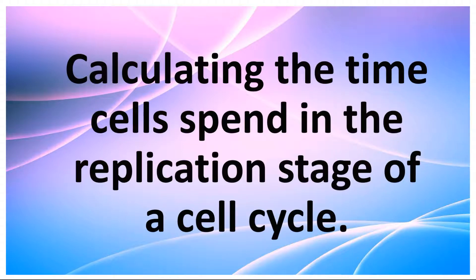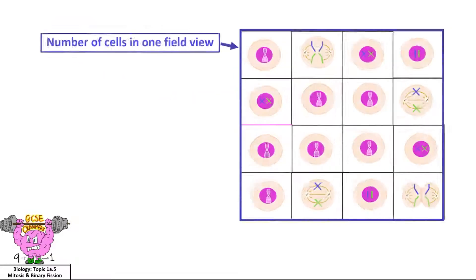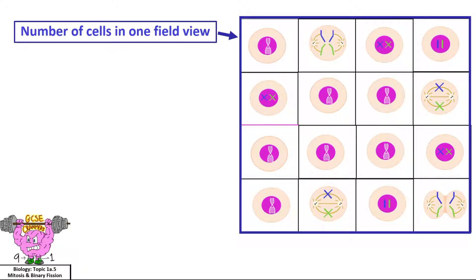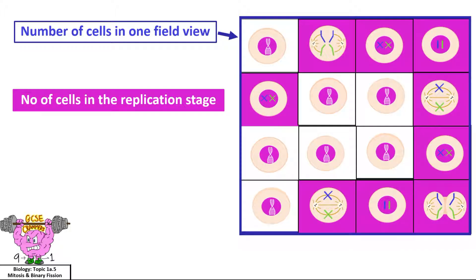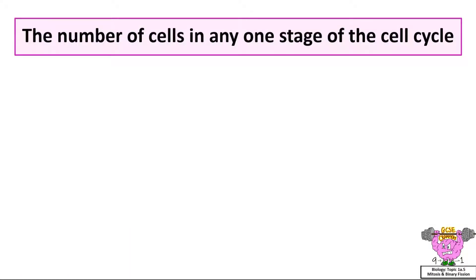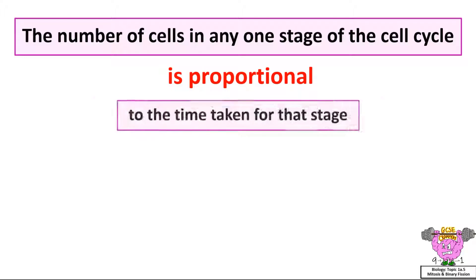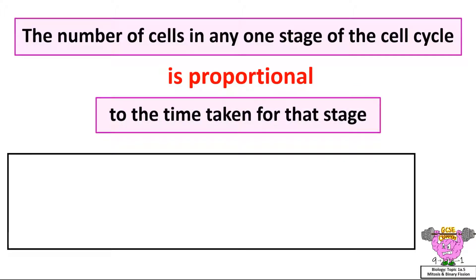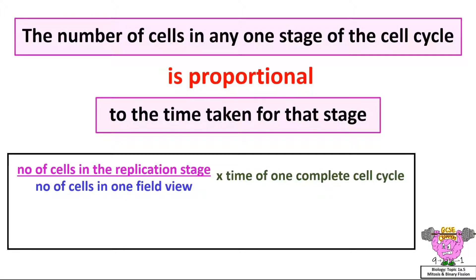Calculating the time cells spend in the replication stage of a cell cycle. What do we need to know to find this? The number of cells in any one stage of the cell cycle, the number of cells in the replication stage, the time of one complete cell cycle. Because the number of cells in any one stage of the cell cycle is proportional to the time taken for that stage. The equation you need to learn is the number of cells in the replication stage divided by the number of cells in one field view, multiplied by the time of one complete cell cycle, which equals how long cells spend in the replication stage.